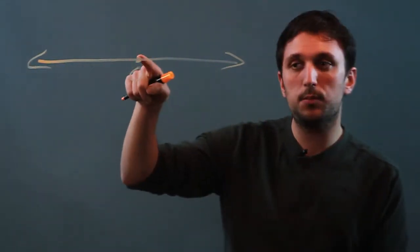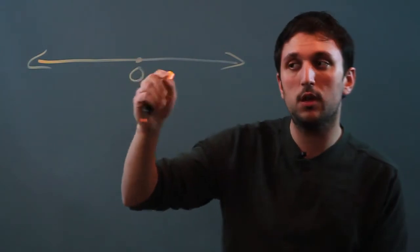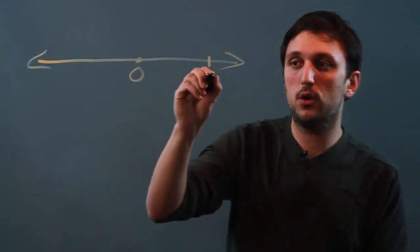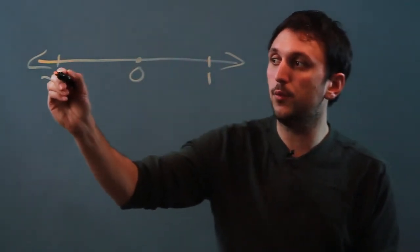So with a number line, it's good to put zero at the middle, at the origin. And then maybe we'll put a one over here and a negative one over here.